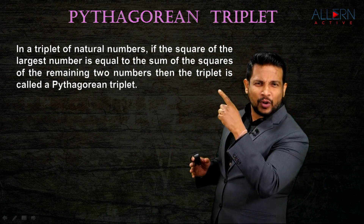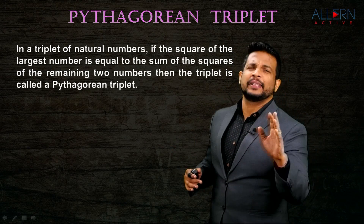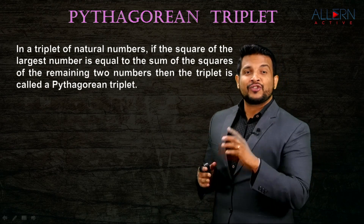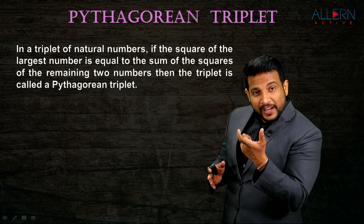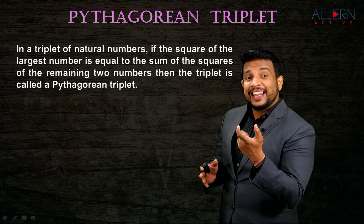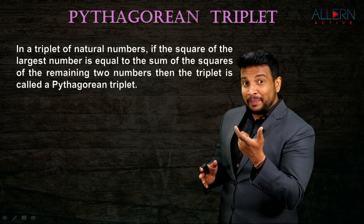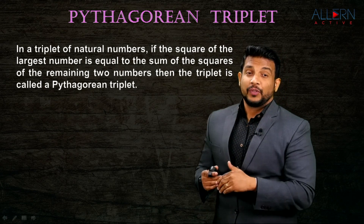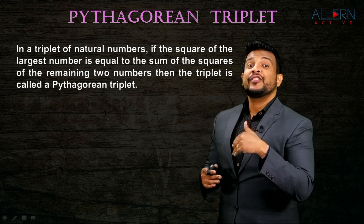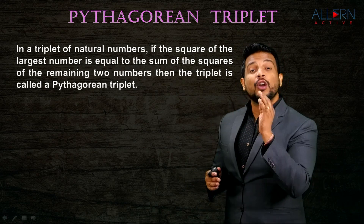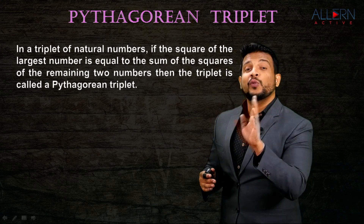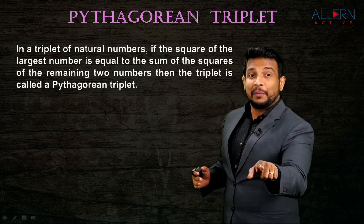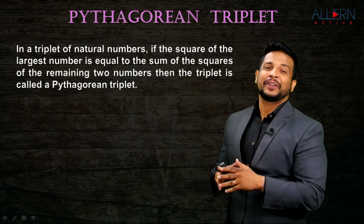It is a very simple thing. It says that in a triplet of natural numbers - meaning in a set of three natural numbers - if the square of the largest number is equal to the sum of the squares of the remaining two numbers, then the triplet is called a Pythagorean triplet.